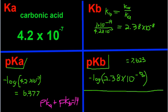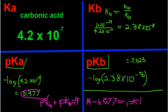So another way we could have done this is 14 minus 6.377 to get our pKb, which comes out to be exactly 7.623 again. That's not too bad.